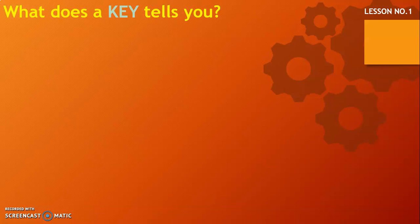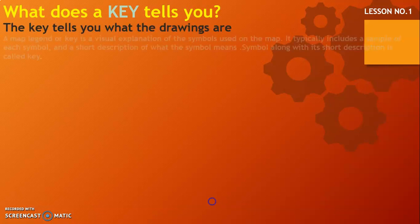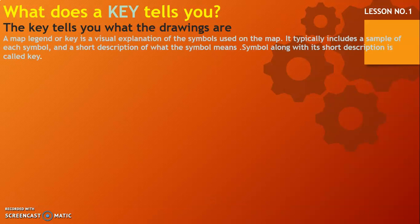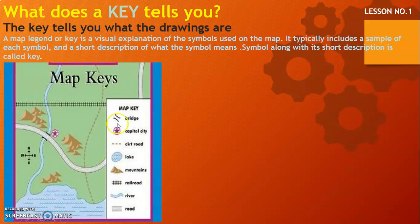What does a key tell you? A key tells you what the drawings are. A map legend or key is a visual explanation of the symbols used on a map. It typically includes a sample of each symbol and a short description of what the symbol means. Symbols along with their short description are called a key.